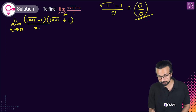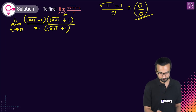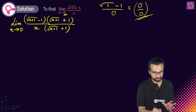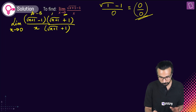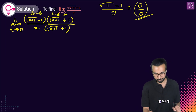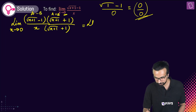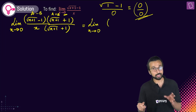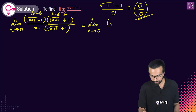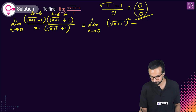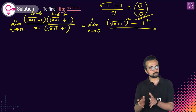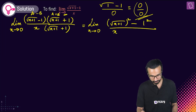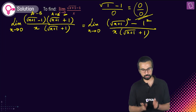We rationalize by multiplying numerator and denominator by root of (x+1) plus one. In the numerator we get the (a-b)(a+b) = a²-b² form directly. So this becomes limit x tends to zero: root of (x+1) whole squared minus 1 squared — that's a²-b² in the numerator.